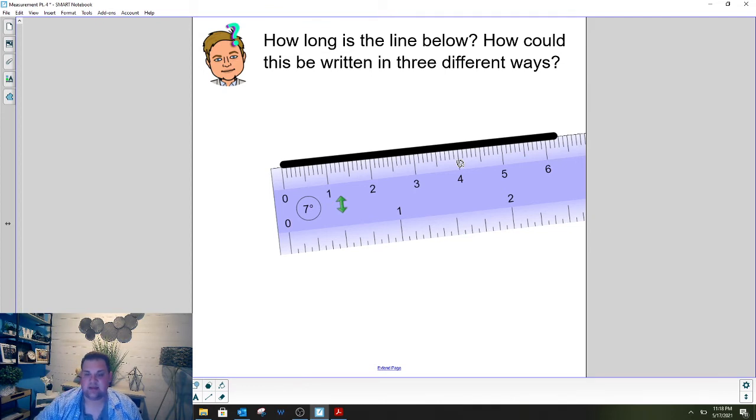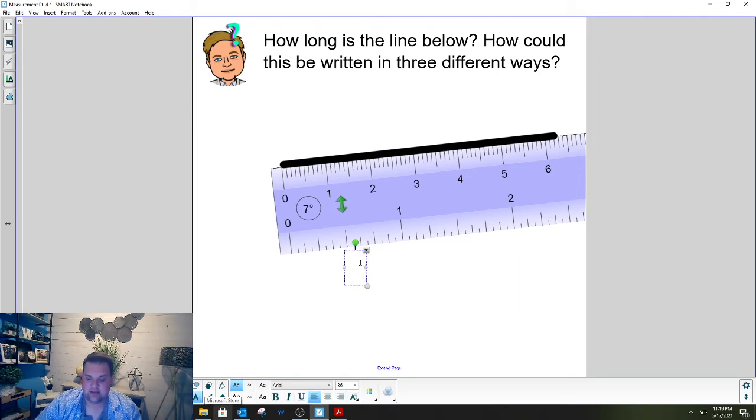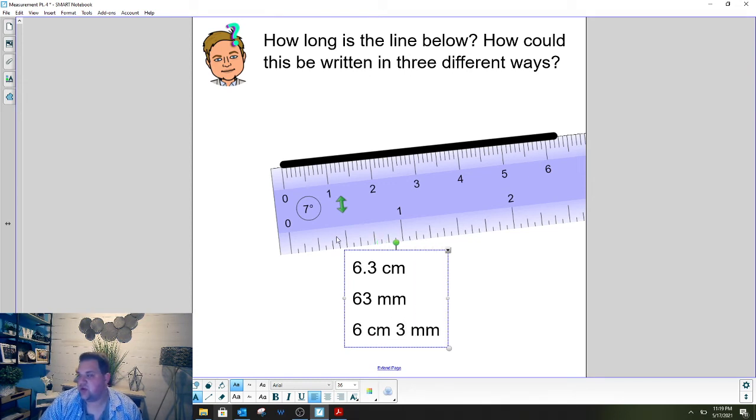All right. If you said that it is 6.3 centimeters you're correct. If you said it's 63 millimeters you're correct. If you said it's 6 centimeters 3 millimeters you my friend are correct. So you could have written it in all three of these ways because they are all equivalent to each other.